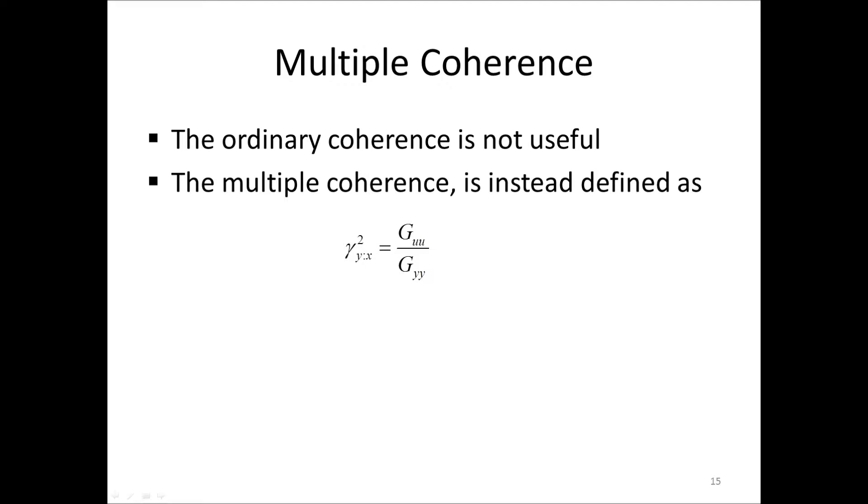Ordinary coherences are not very useful for MIMO systems, since they all are less than 1. To assess the quality of MIMO FRF estimates, we can instead define the multiple coherence, denoted gamma squared sub y colon x, where the colon should be read as 'given' as in statistics. From the figure here, the multiple coherence is defined as the ratio of the coherent output spectrum G uu and the output G yy. This is similar to the single input single output case.